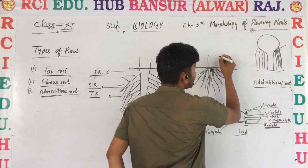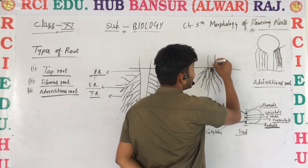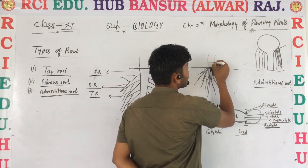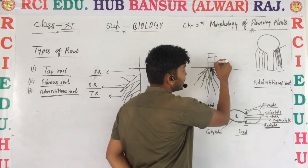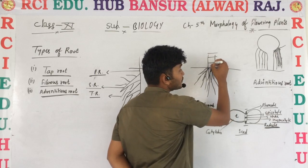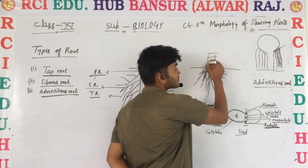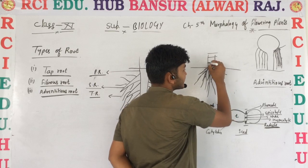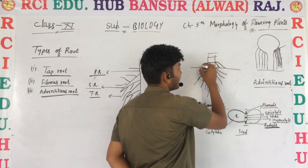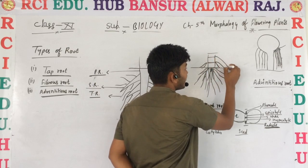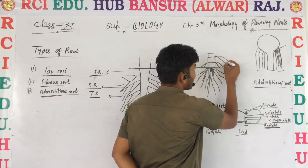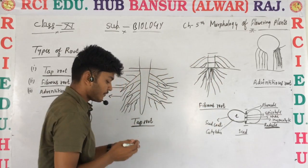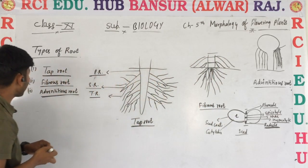Besides the banyan tree, in bamboo and other plants at the stem nodes and internodes — the nodes near the base automatically produce roots. These roots are also known as adventitious roots.